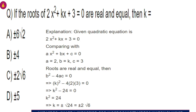So k squared minus 24 equals 0, which gives k squared equals 24, and k equals plus or minus root 24, which simplifies to plus or minus 2 root 6.